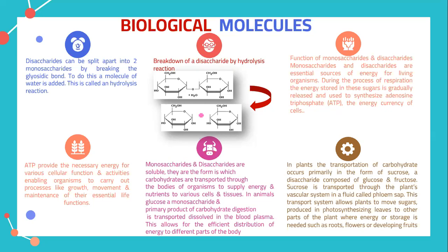Breaking down a disaccharide by hydrolysis reaction produces two monosaccharides. You can see from this reaction diagram that the disaccharide is already linked with a glycosidic bond, and when it goes through hydrolysis, the molecule is separated.